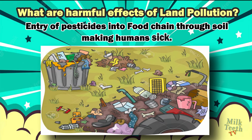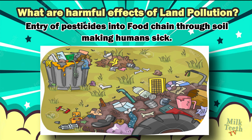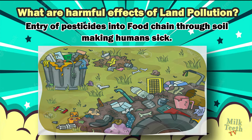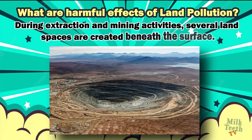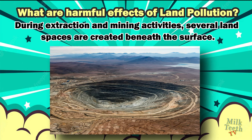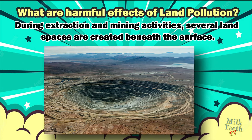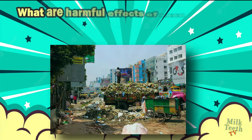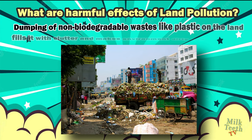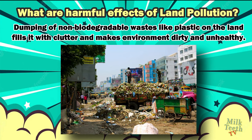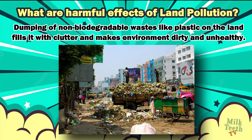Entry of pesticides into the food chain through soil makes humans fall sick, and animals can also fall sick due to this. During extraction and mining activities, several hollow spaces are created underneath the earth's surface. Lastly, dumping of non-biodegradable waste like plastics on land fills it with clutter and makes the environment dirty and unhealthy for humans to live in.